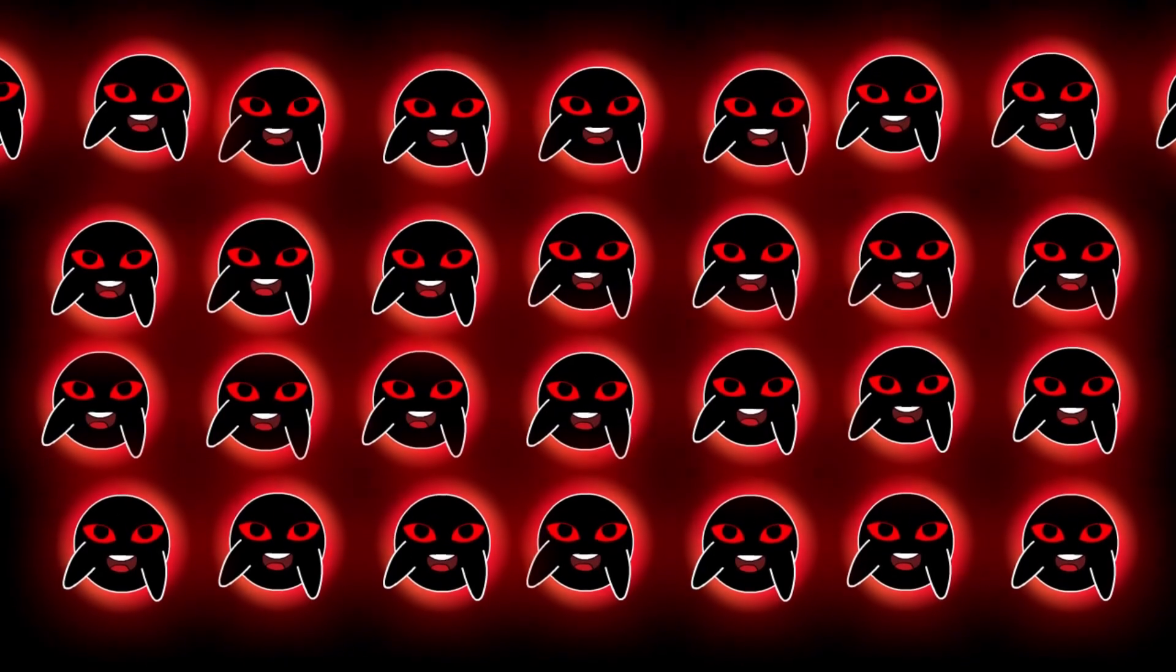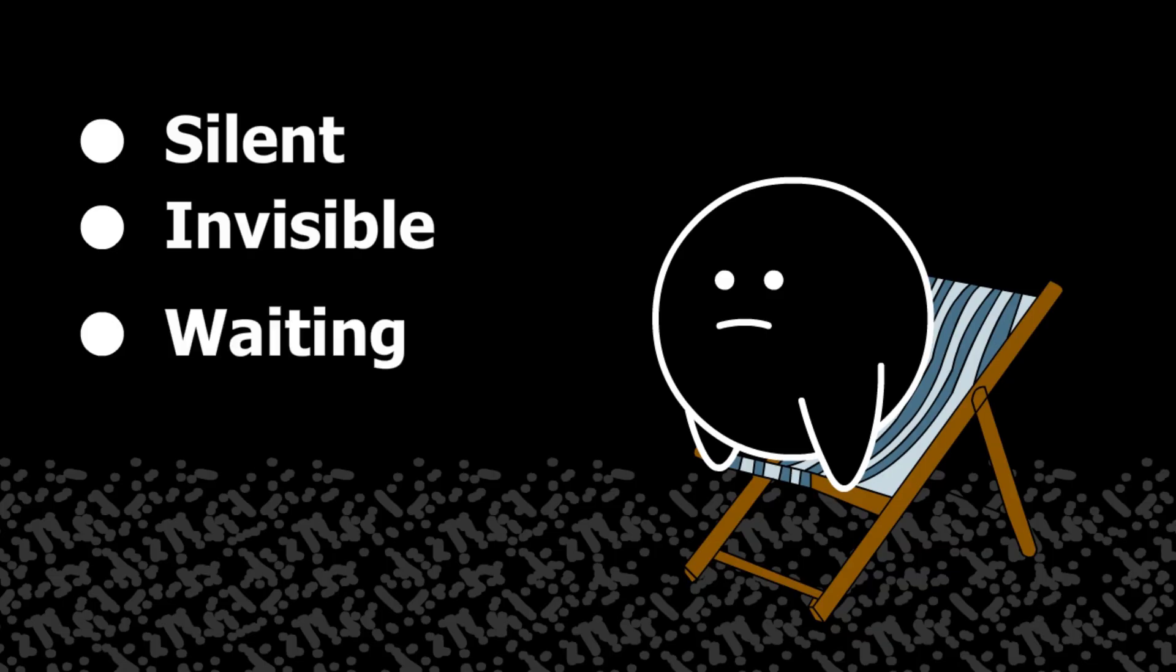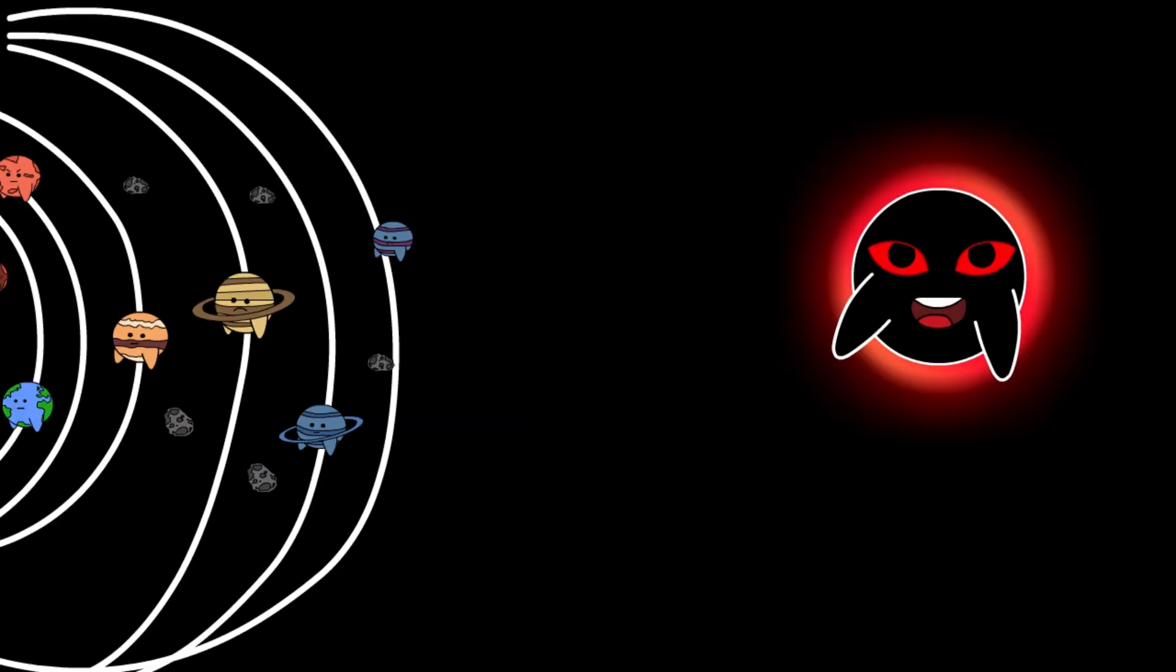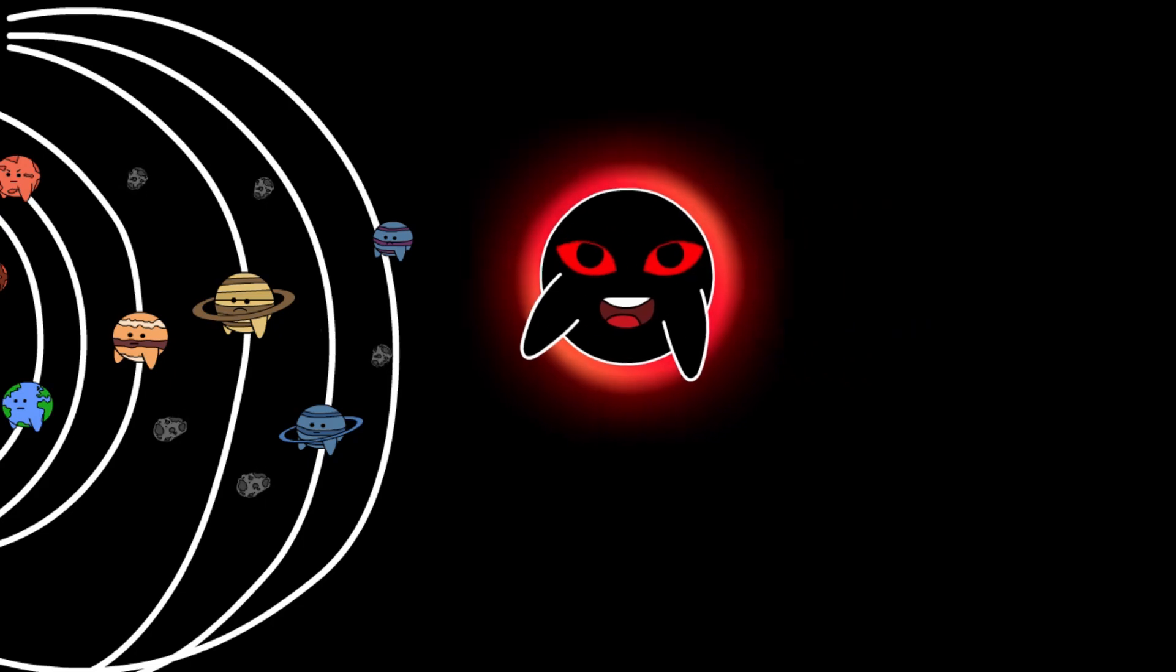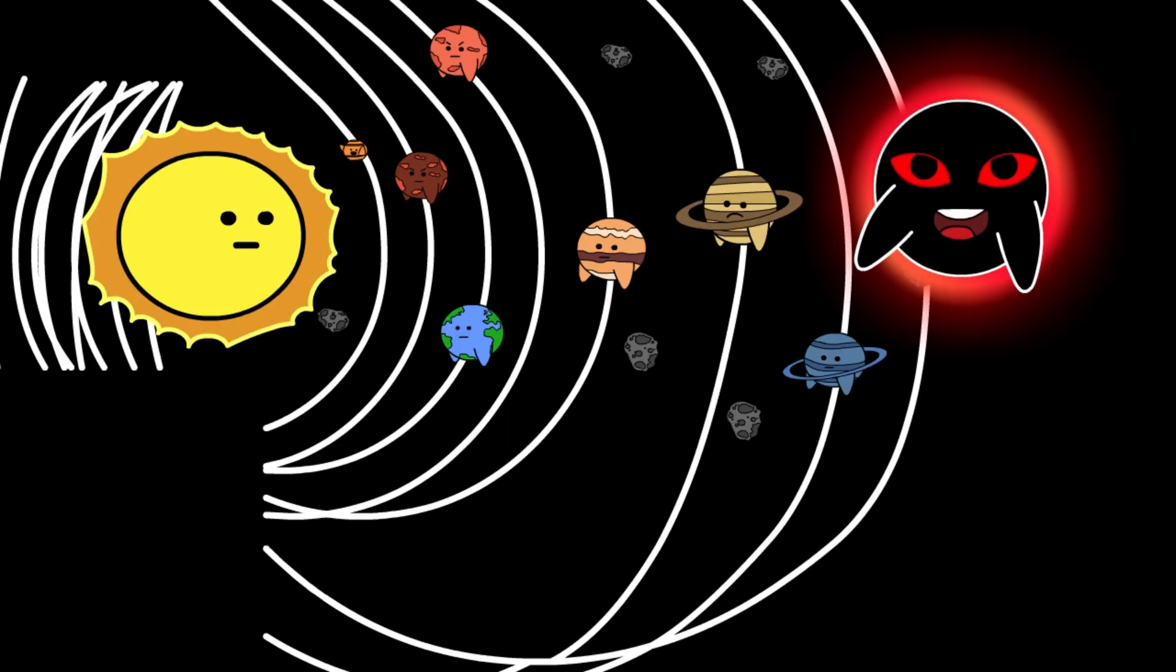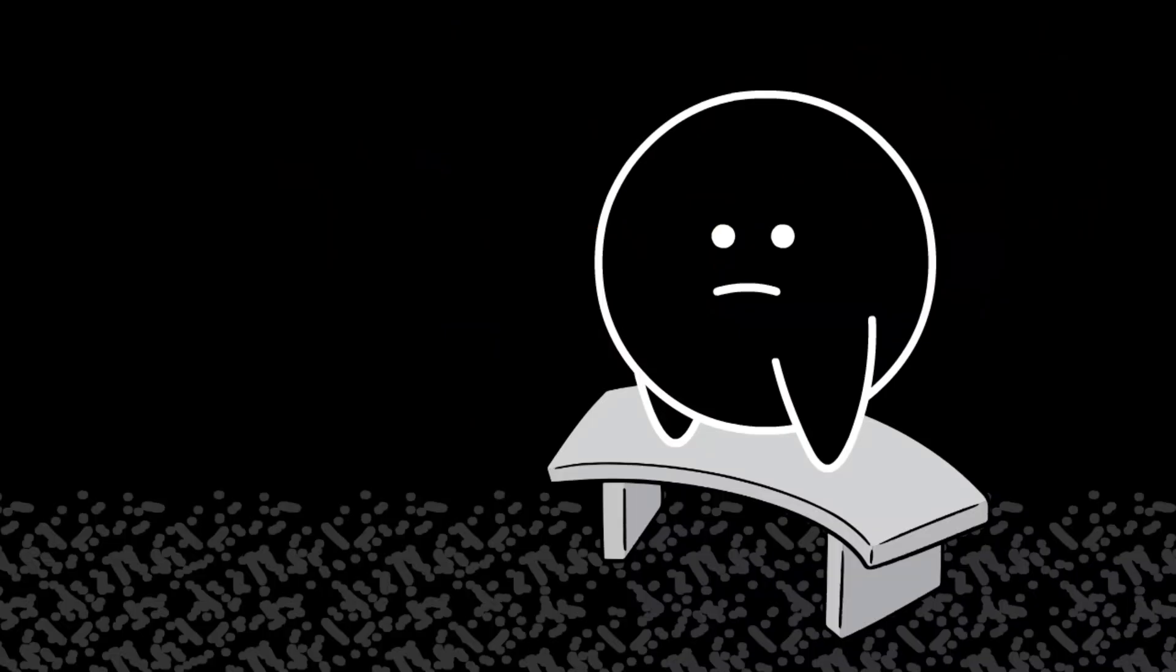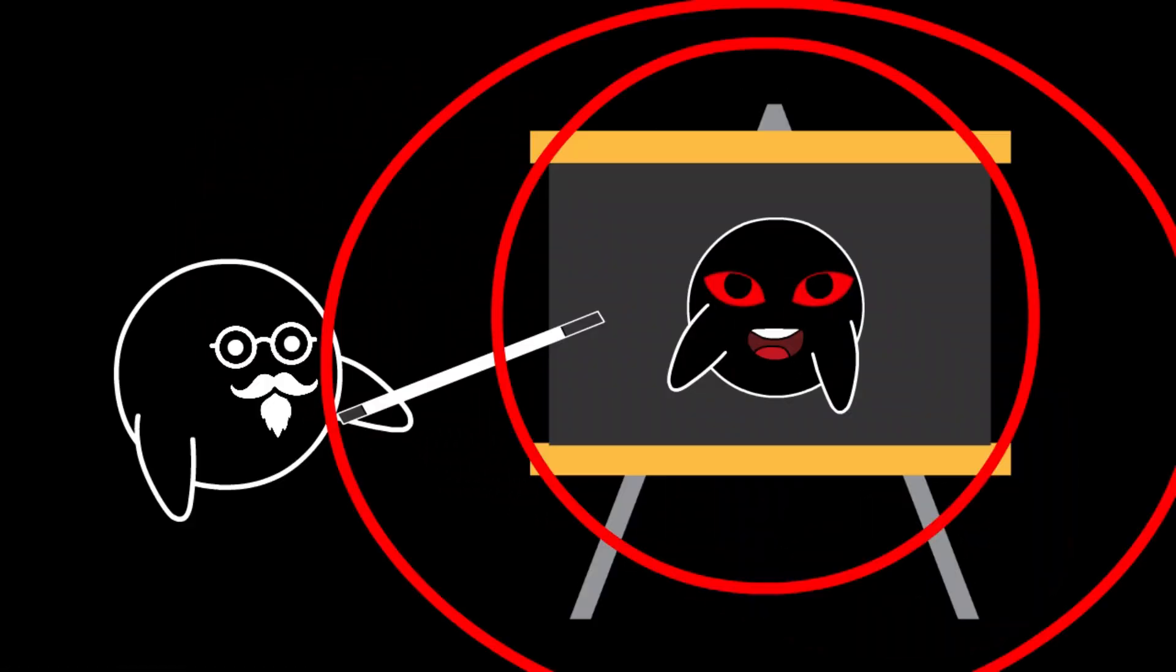And the terrifying part: there are hundreds of millions of black holes in our galaxy alone—silent, invisible, waiting. Let's say one of them, maybe a wandering rogue black hole, starts drifting toward our solar system. At first, we might not even notice. Black holes don't glow on their own. You can't see them until they start devouring matter.